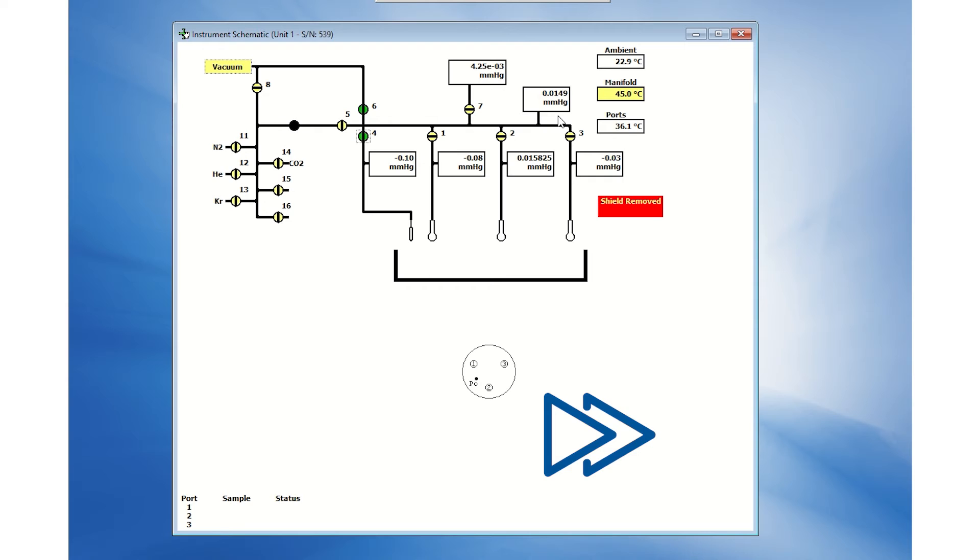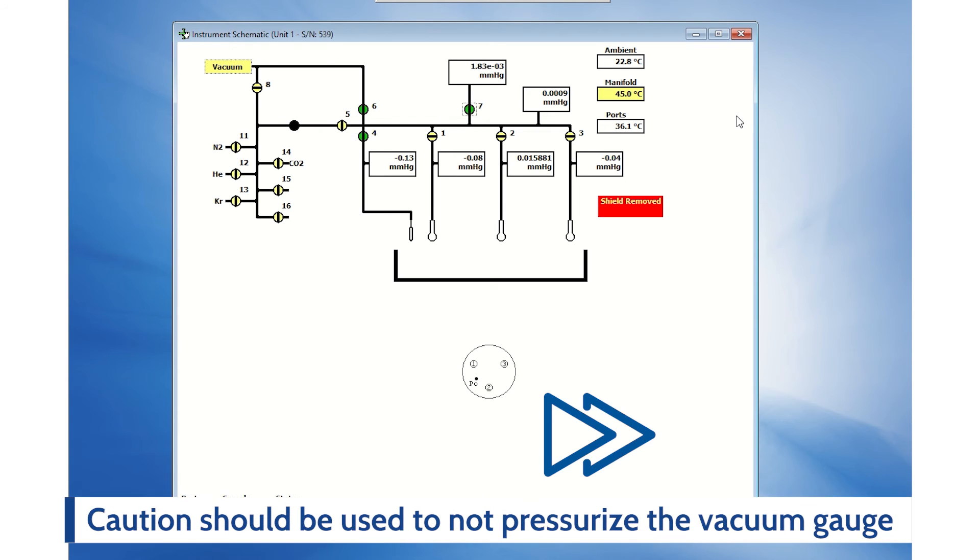Once the pressure reads near zero, open valve 7 to the vacuum gauge for lower pressure readings. Ensure to open valve 7 only when the pressure is near zero and keep it closed before increasing in pressure to prevent any damage.